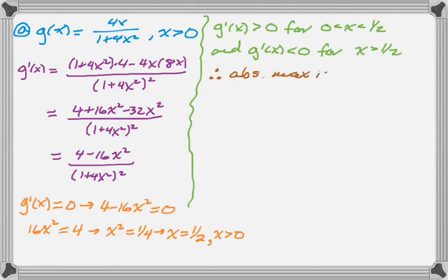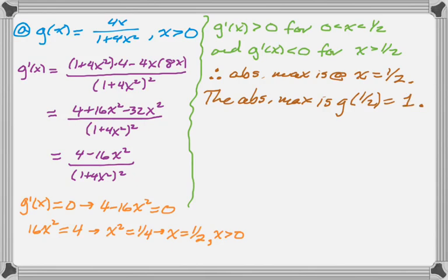Therefore, the absolute maximum must occur at x equals 1 half. The question says to find the absolute maximum, so the absolute maximum is actually g of 1 half, which, if you plug 1 half into g of x, it's 4 times 1 half is 2 in the numerator, and then 1 plus 4 times 1 half squared is 4. So you end up with 2 in the denominator. So 2 over 2, which is 1.